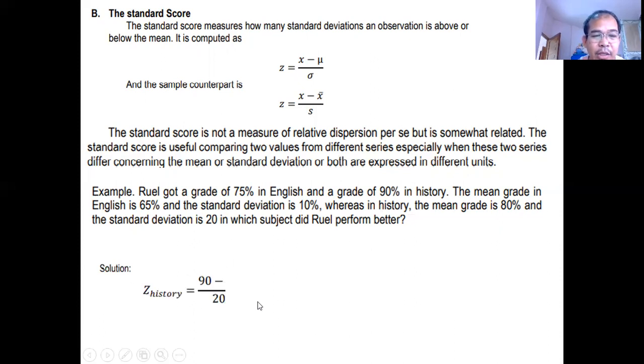So, our solution, let's solve the z-score for history and solve the z-score for English. So, ang z-score ng English is 1.0. What will be the z-score of history? 90 minus 80 is 10. 10 divided by 20 is 0.5. So, the z-score ng history is less than the z-score of English. So, our conclusion would be Ruel perform better in English compared sa history. Because it has a higher z-value compared to history. English has a higher z-value compared to history.